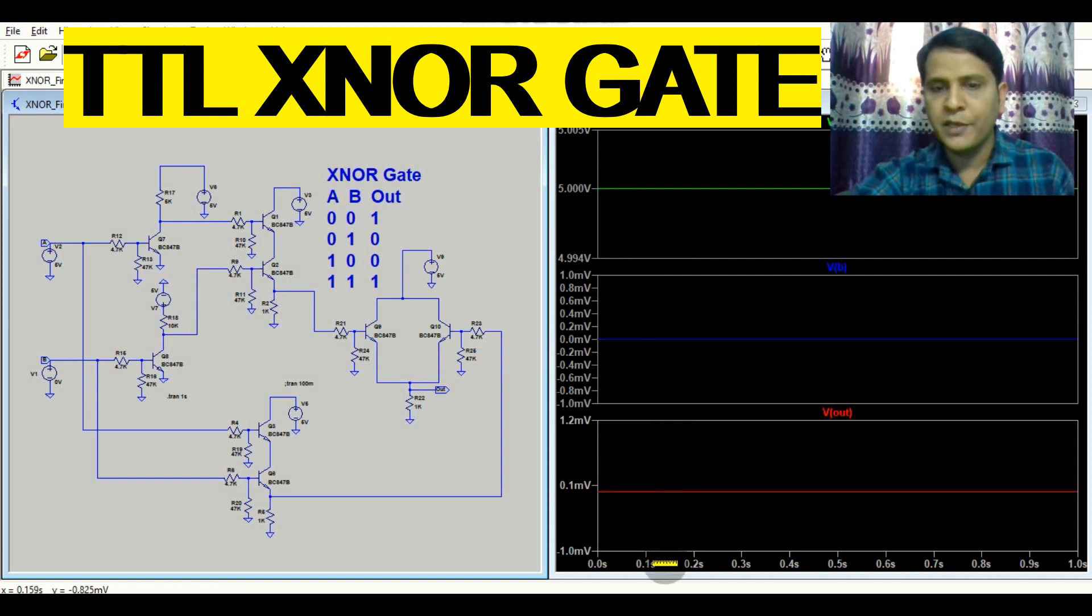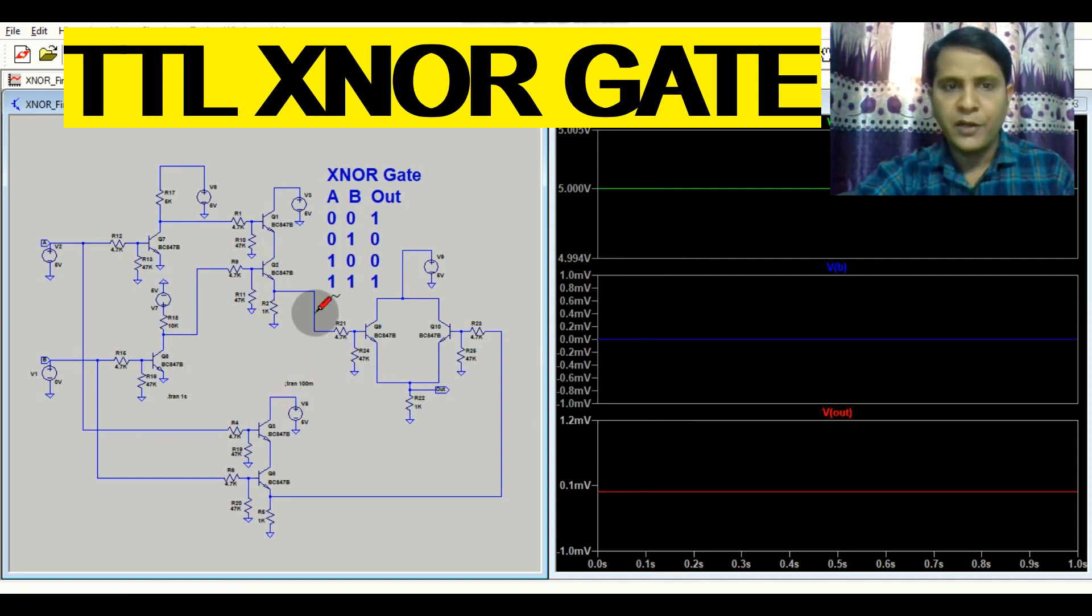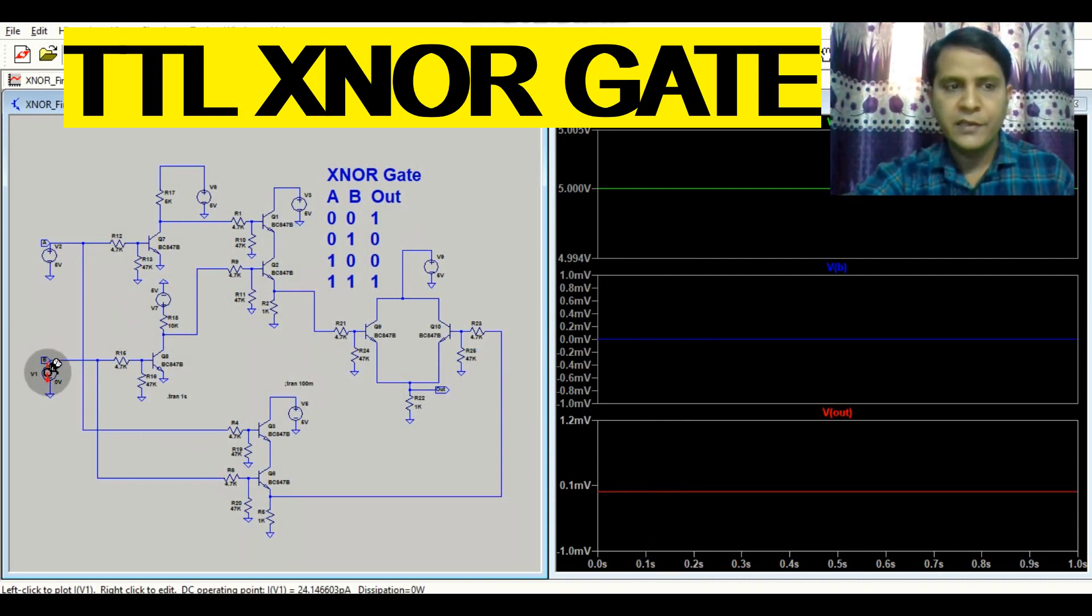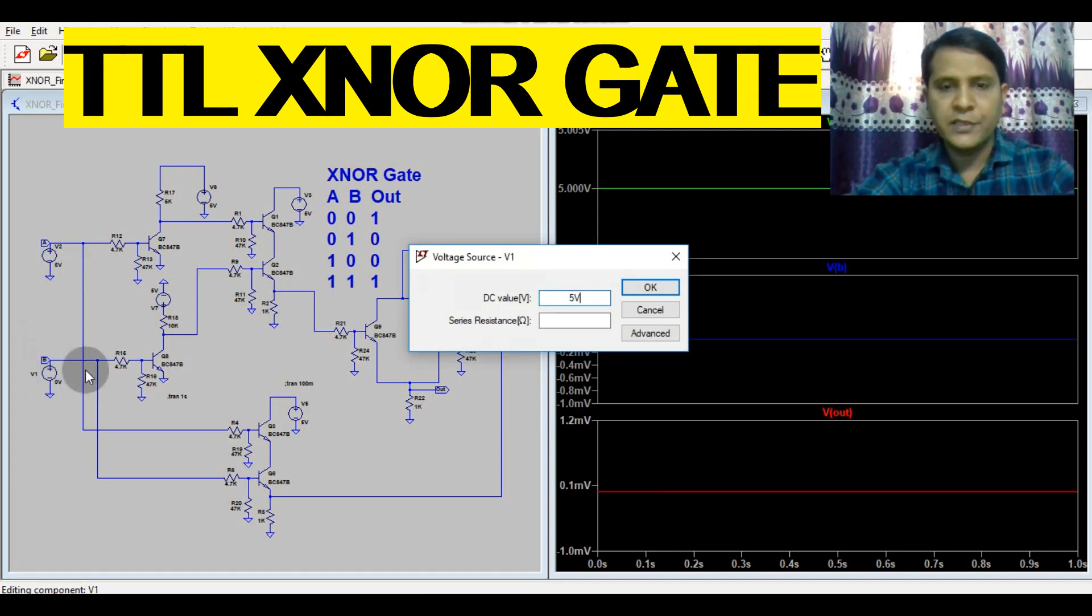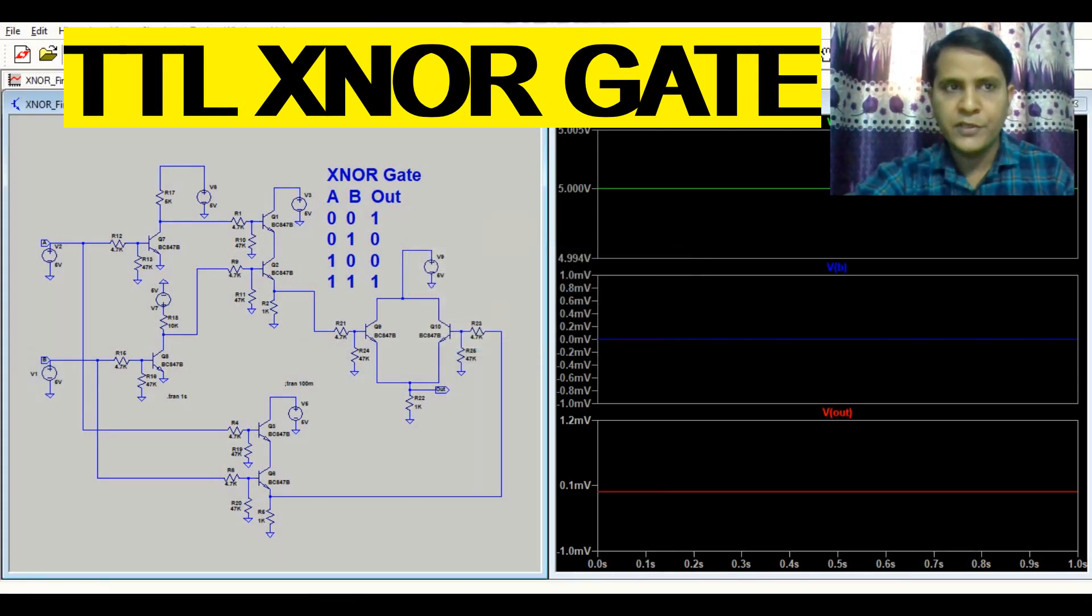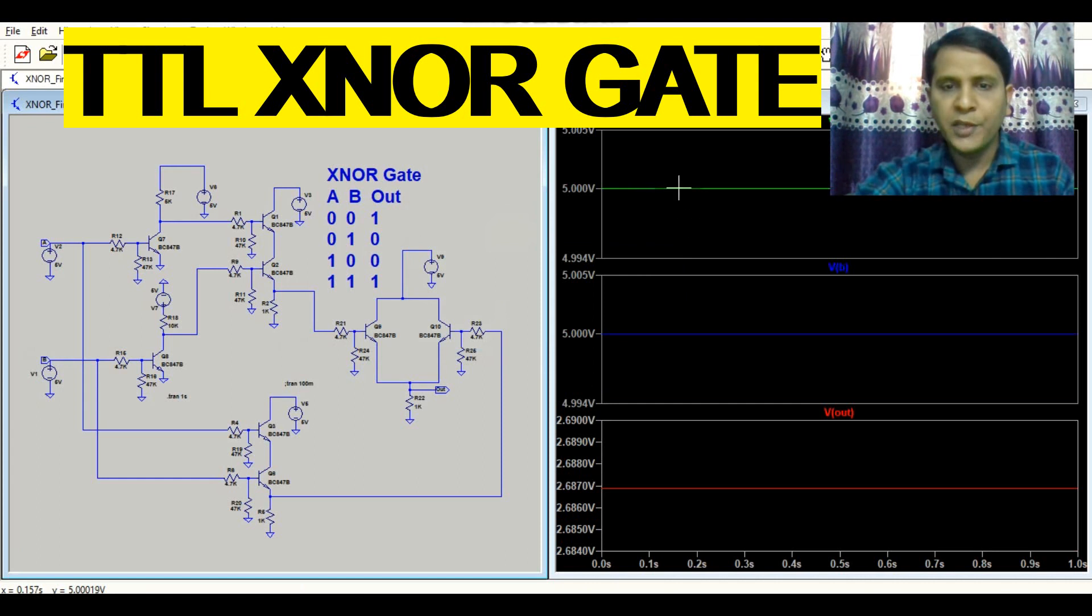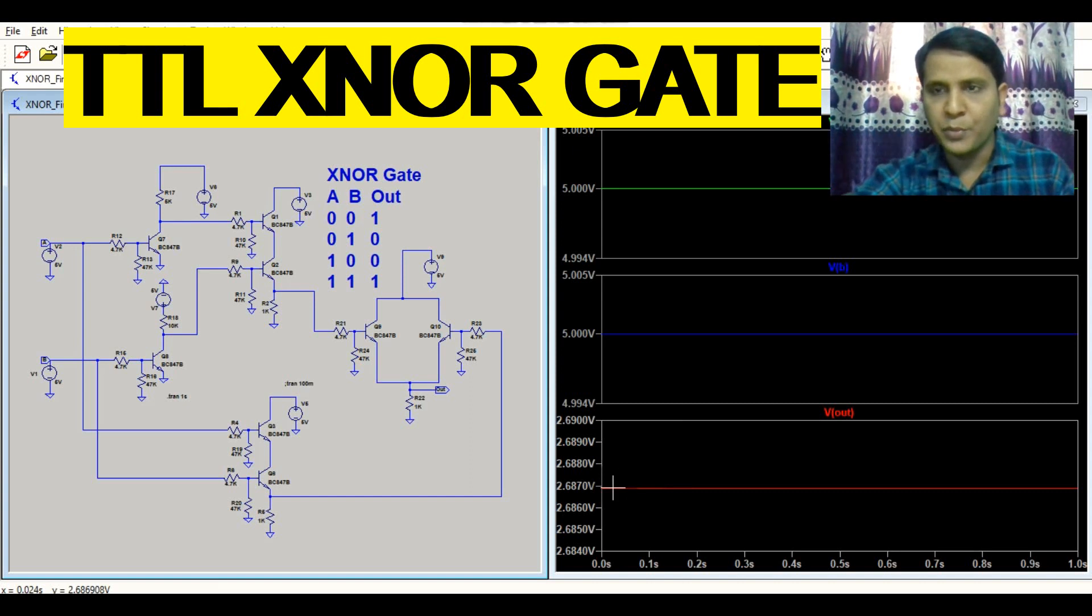Now let us consider the fourth case: V equals 5 volt, V equals 5 volt. So if both inputs are logic high, that means 5 volt, your output is logic high, that means you are getting 2.6 volt.